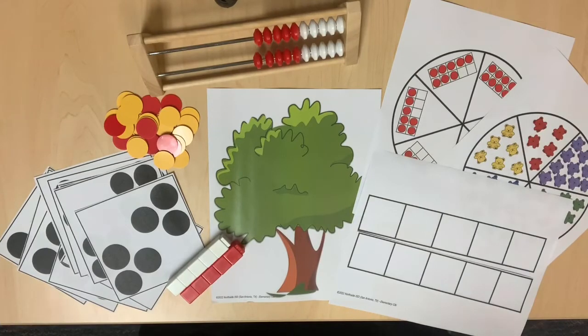The first big concept involves counting, representing, and subitizing with objects and pictures for the numbers 0 to 10.